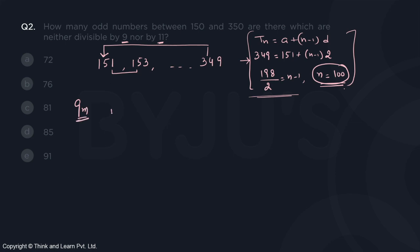How many multiples of 9 are there? The first multiple of 9 is 153 in this range, that is 17 into 9. Of course, the next would be 19 into 9 because you are talking about odd numbers.